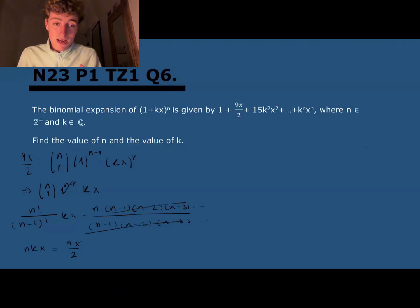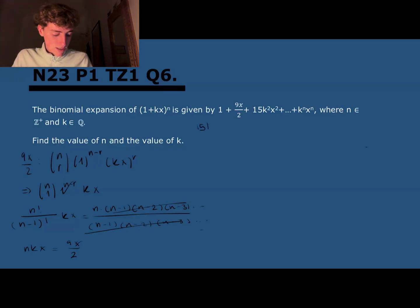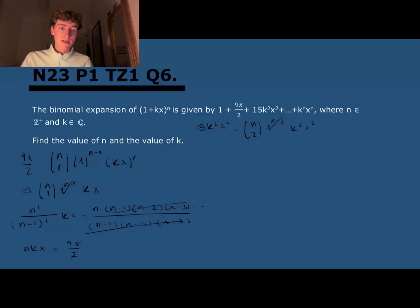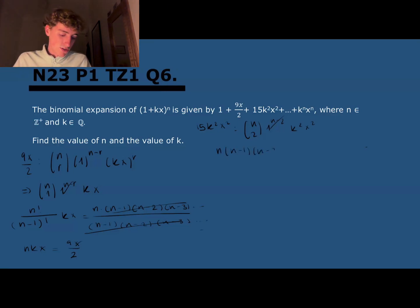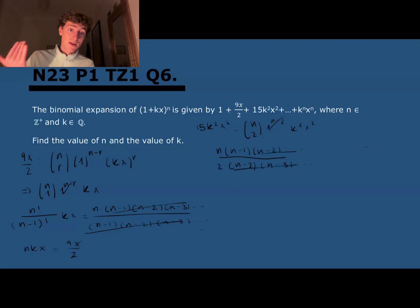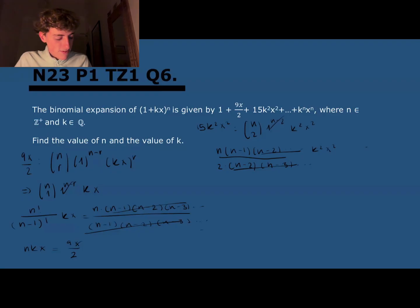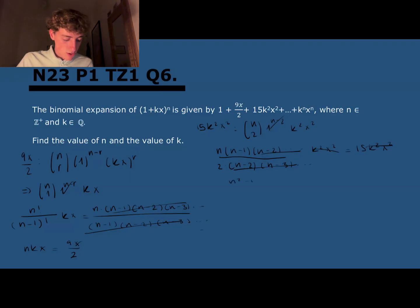The third term is 15k²x². Here r equals 2, so we compute n choose 2 times k²x². n choose 2 is n factorial over (2 factorial times (n minus 2) factorial). Cancelling (n minus 2) factorial from top and bottom leaves n(n minus 1) over 2. Setting this equal to 15: n(n minus 1) over 2 equals 15, so n² minus n equals 30.